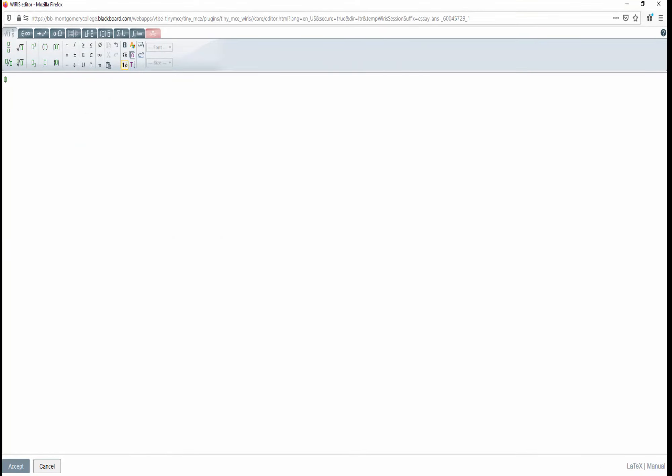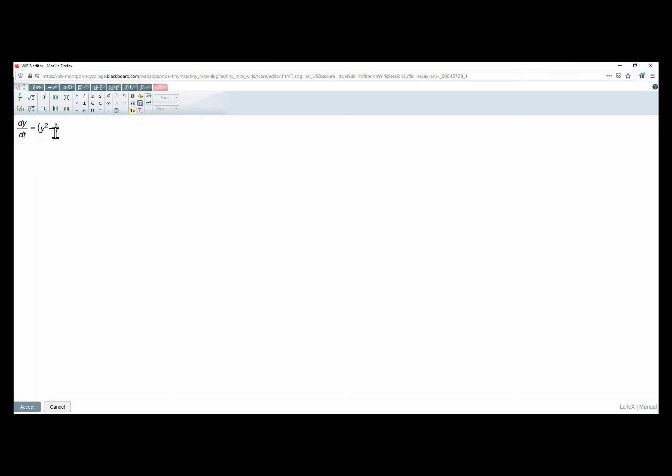So we got dy dt, and I am increasing the font size but you don't have to. So y squared minus, excuse me, minus y minus 20, right? And then we have sine inverse y over 9. And now, so you can see this here.